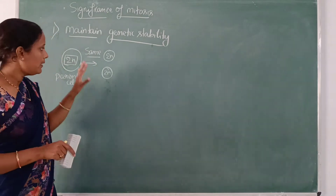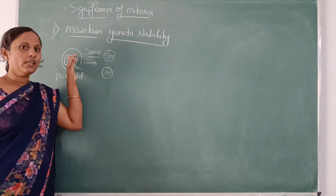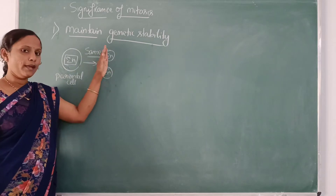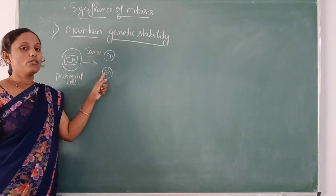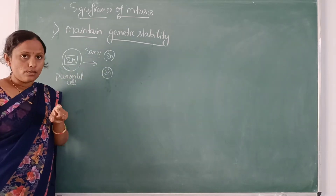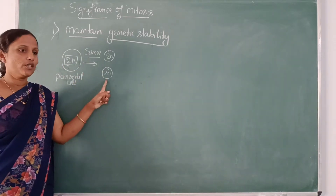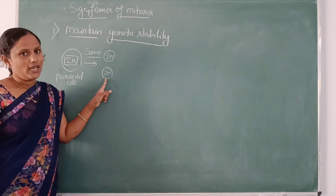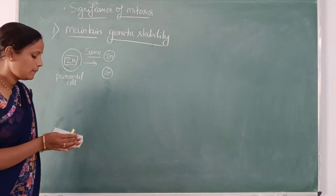For example, if this cell is producing insulin, the same genetic information should be carried to the daughter cell also, which means those cells should also produce insulin. If there is a change in the information, that function will also be changed. So this is found to be very significant.